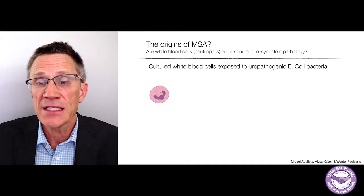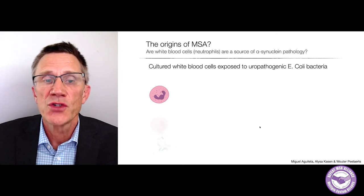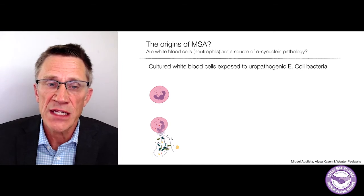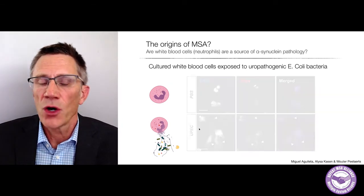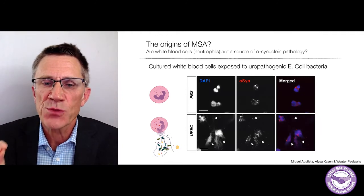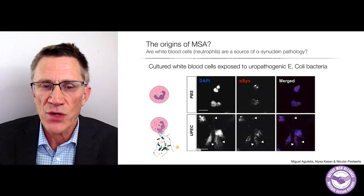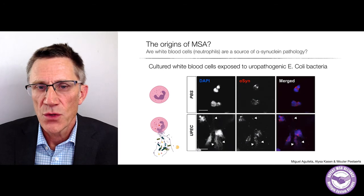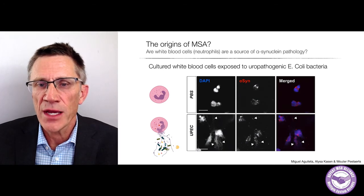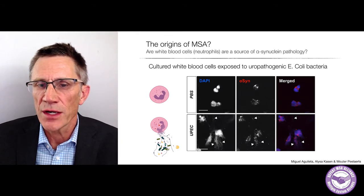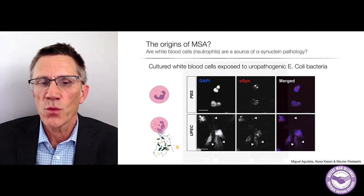Miguel Aguileta and Elisa Kaysen — the postdoc and student who joined this project — have created a cell culture model where they look at the release of these NETs as cells are exposed to bacteria. We see cells releasing these fibrous NETs that also contain alpha-synuclein. So white blood cells — immune cells that deal with bacteria — can release alpha-synuclein, and we're now trying to understand what all of this means.